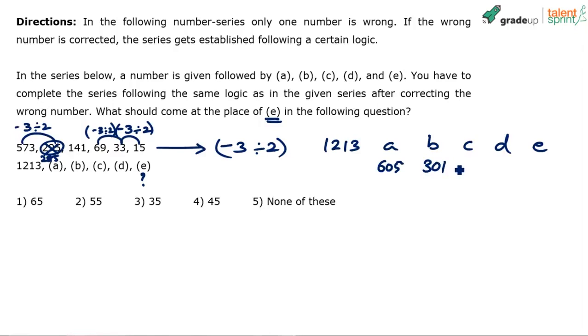298 by 2 is 149, correct. 149 minus 3 is 146. 146 by 2 is 73.